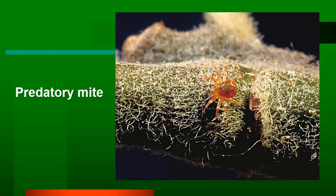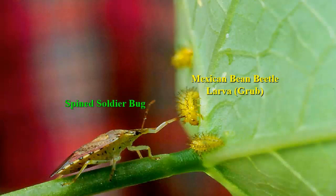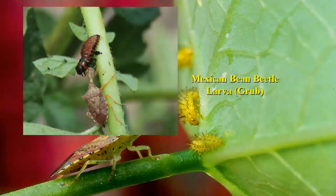Not all mites are bad mites. Two-spotted spider mites in soybeans — nobody wants those. But there are also predaceous mite species that specialize on the two-spotted spider mite, and under the right conditions, those predatory mites will keep two-spotted spider mite populations in check. That's the spined soldier bug consuming a Mexican bean beetle — not common in northwest Ohio, but more common in the southern and eastern parts of Ohio. There's also a spined soldier bug feeding on a potato beetle larva, so they'll utilize all kinds of larvae.